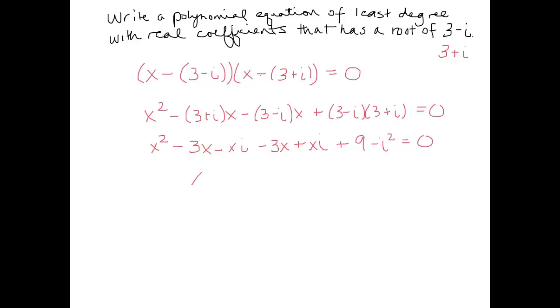Let's see here. We get x squared minus 6x. Minus xi plus xi cancels. And negative i squared really becomes positive 1, so we have plus 10. And there's a polynomial equation that has a root at 3 minus i and 3 plus i.